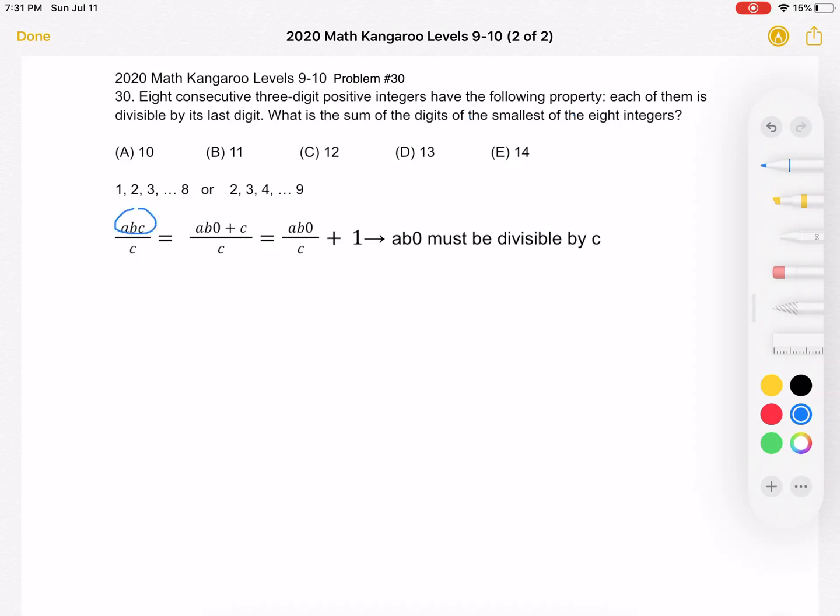The problem tells us that with number ABC, a three-digit number, the last digit C is able to divide. We can take our number ABC and write it as AB0 plus that last digit C. When we divide these two numbers we're summing together, this must be an integer because C is supposed to divide the number ABC. We end up with AB0 over C plus one. Obviously, one is already an integer, so AB0 divided by C must also be an integer for their sum to be an integer. That means that AB0 must be divisible by C.